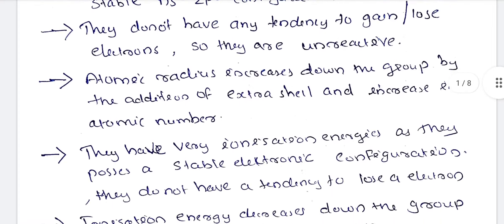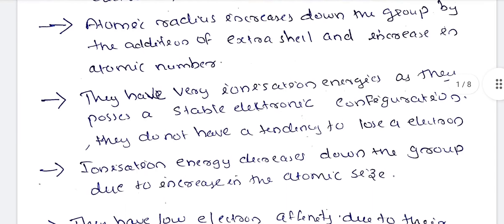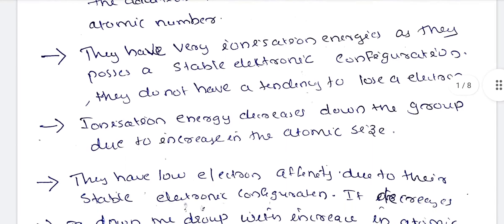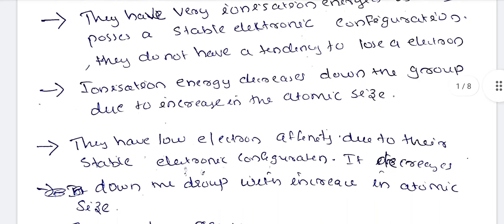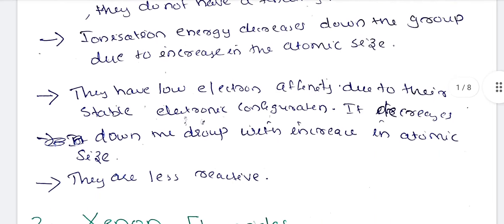Atomic radius increases down the group by the addition of extra shells. They have very high ionization energy because the last electron is removed from a stable configuration. That is why the ionization energy is high.